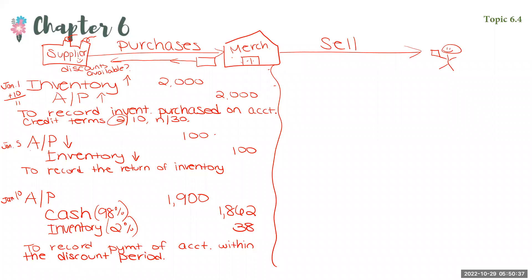So let's say we make a sale on account. So accounts receivable — instead of service revenue, we're using sales revenue. That's your journal entry to record a sale to a customer on account.